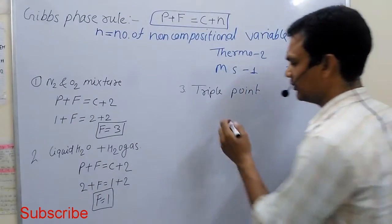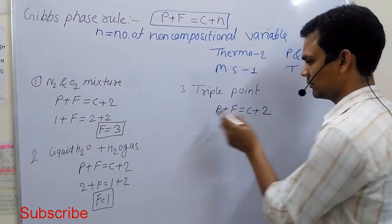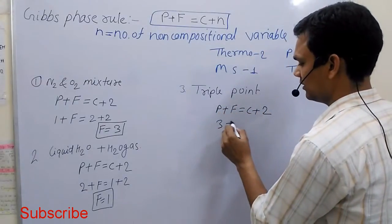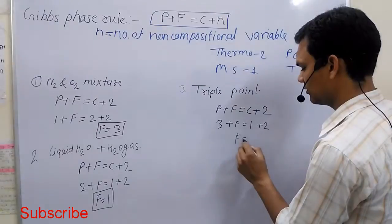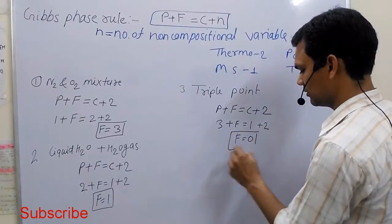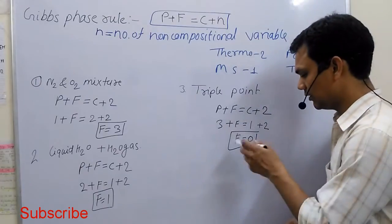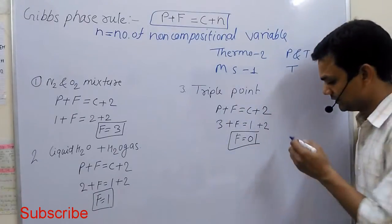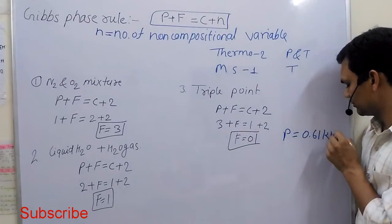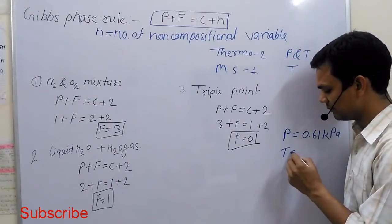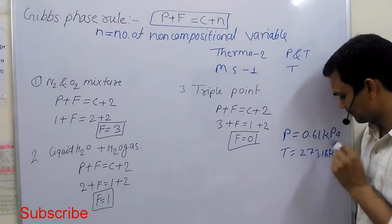For the triple point conditions: phases is 3, chemical component is water so C equals 1. Applying the formula: 3 plus F equals 1 plus 2, giving degree of freedom equal to 0. That means the standard pressure for the triple point is 0.61 kPa and the standard temperature is 273.16 K.